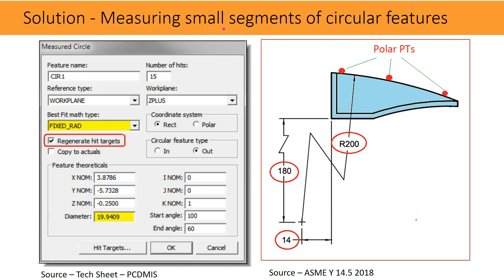Even before ASME Y14.5 2018, people were traditionally using the constraint diameter methodology. This feature in CMM software requests a theoretical diameter with a given fixed location, taking it as a reference for the deviation of form. This is measured by probing the polar points on the radius. Nowadays, deviations against nominal data or CAD data are used as normal and regular practice.